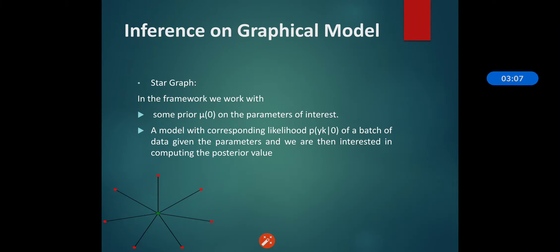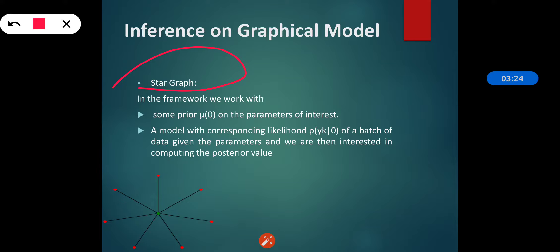The next type of graph that is part of inference on graphical models is the star graph. As the graph representation is in the form of a star, it is called the star graph. It contains a parent node, represented as the master node 0, and the nodes y_i, y_k, y_j are carried out from that parent node. In this framework, we work with a prior mu_0 on the parameters of interest, since 0 is the root node.